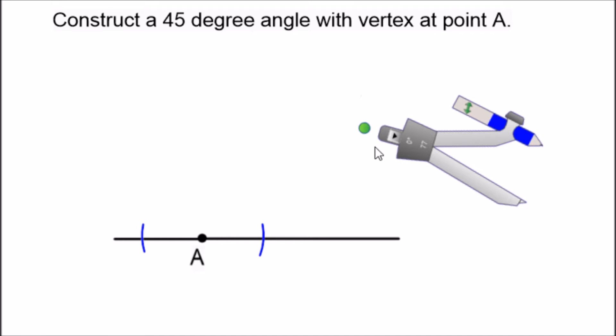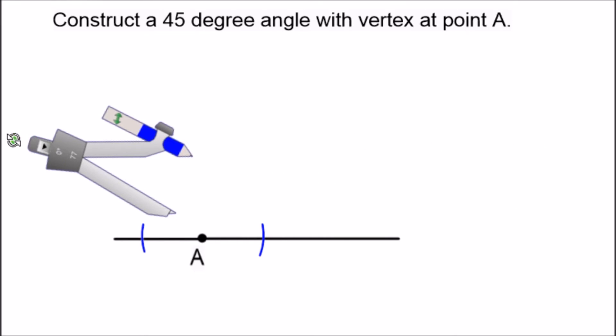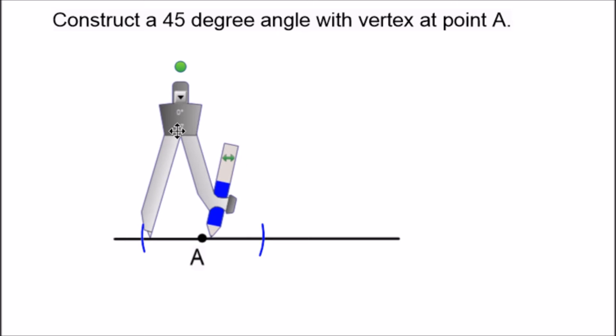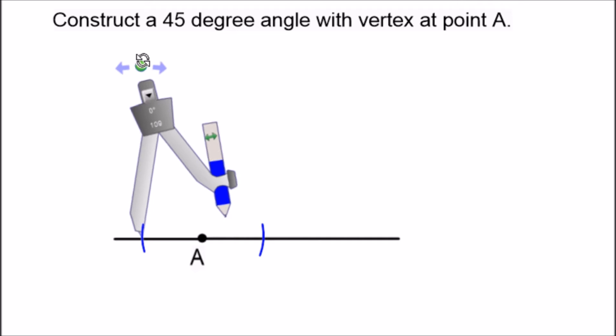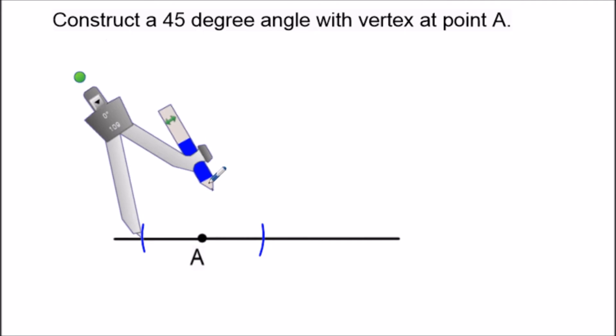From here what we want to do is move the compass to the intersection points we just made and now we're going to have to extend it a bit because that's the only way we're going to generate another intersection point to make our perpendicular line.